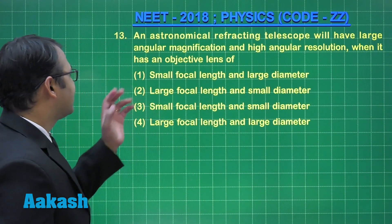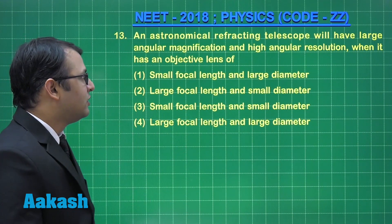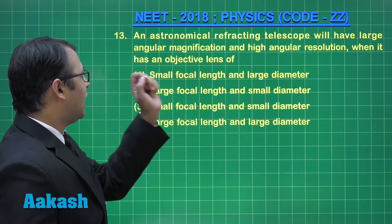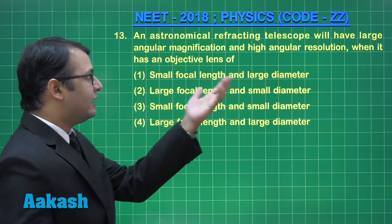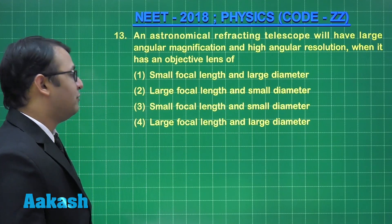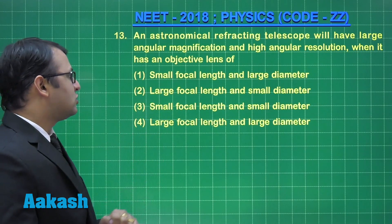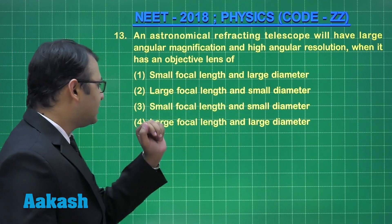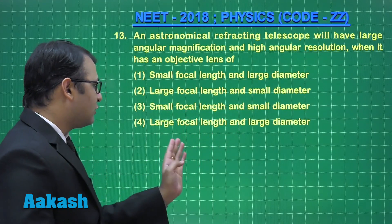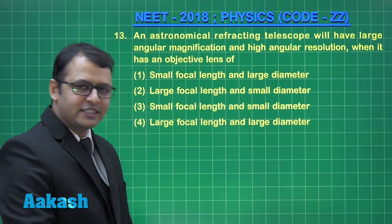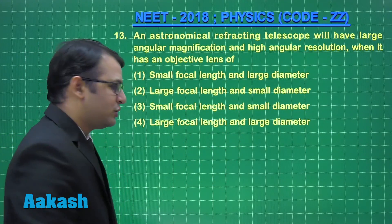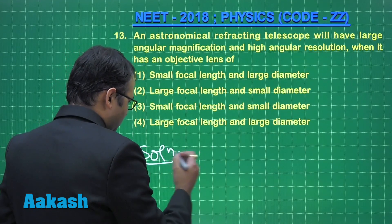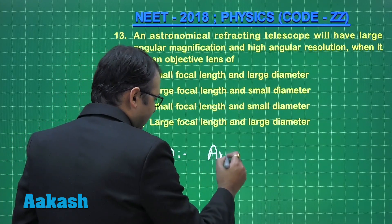Let's start with question number 13. The question says that an astronomical telescope will have large angular magnification and high angular resolution when — and these are the four options: small focal length and large diameter, large focal length small diameter, small focal length and small diameter, large focal length and large diameter. Let's start with the solution.